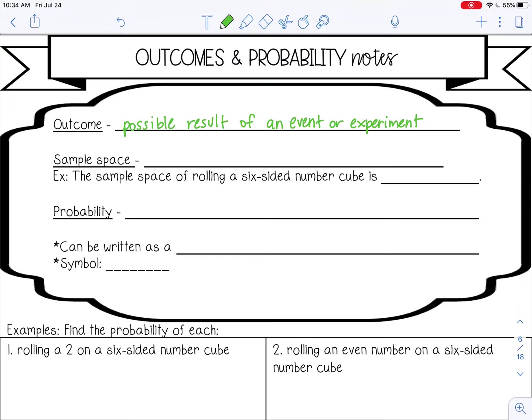A sample space is the set of all possible outcomes. For example, the sample space of rolling a six-sided number cube would be all the numbers on a number cube, so 1 through 6. A sample space is a set, so you put it in brackets.